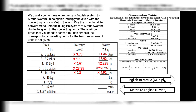Next, convert 10 kilograms to pounds. That is metric to English, therefore we divide. The converting factor for pounds to kilograms is 0.45, so we divide 10 by 0.45 and the answer is 22.22 pounds.